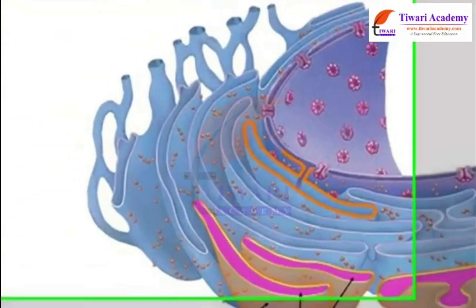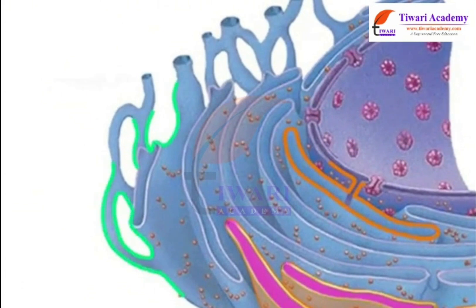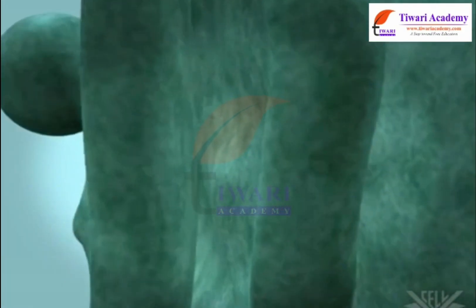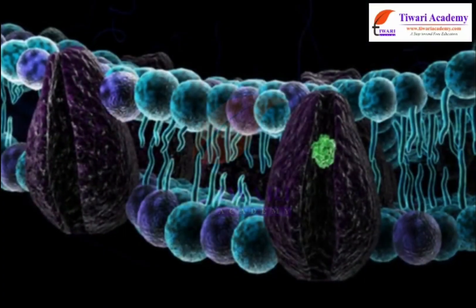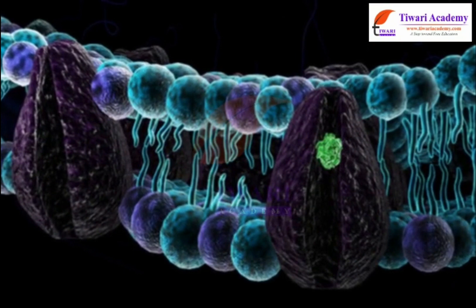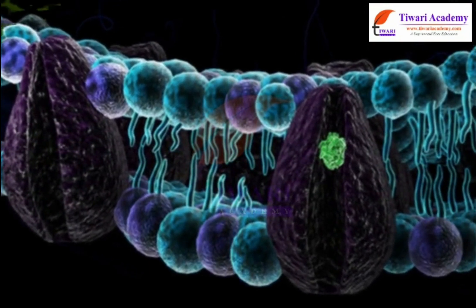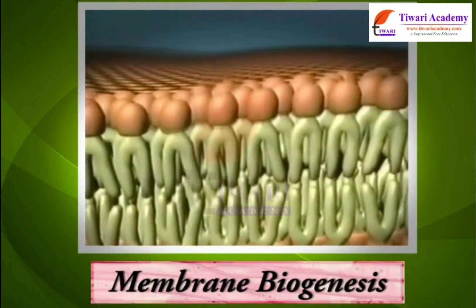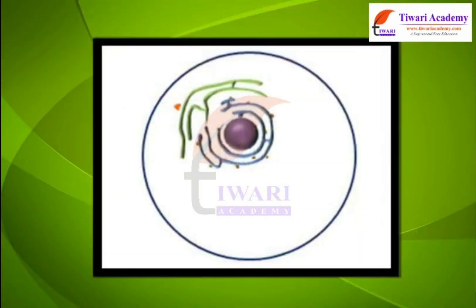The smooth endoplasmic reticulum (SER) does not contain any ribosomes on its surface. The SER is helpful in the manufacturing of fat molecules or lipids, which are important for cell function. Some of these proteins and lipids help in building the cell membrane — a process known as membrane biogenesis. The SER also plays a crucial role in detoxifying many poisons and drugs in the liver cells of vertebrates.